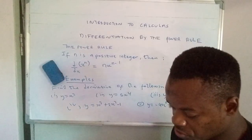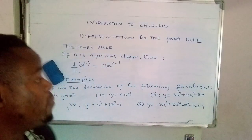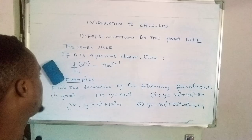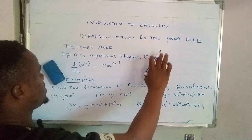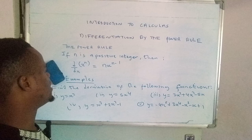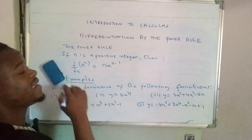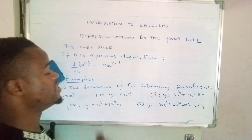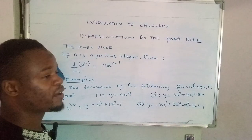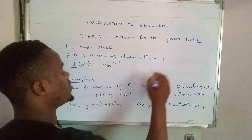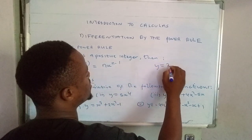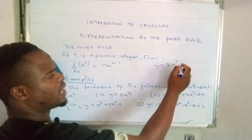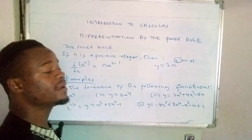So now, what does the power rule state? Specifically, we're going to look at the power rule of positive indices. Here is the statement of the power rule. It says that as long as the index of the variable of a given function is positive — the index is denoted by n — then when you differentiate that function, the rule applies.